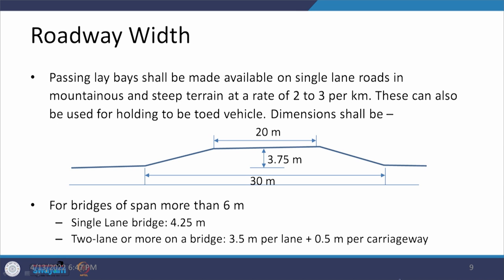On roads in steep and mountainous terrain with restricted width, slow-moving vehicles like trucks can cause a queue of faster vehicles behind them that are unable to overtake. To address this situation, passing lay-bys need to be provided at suitable intervals along the road.